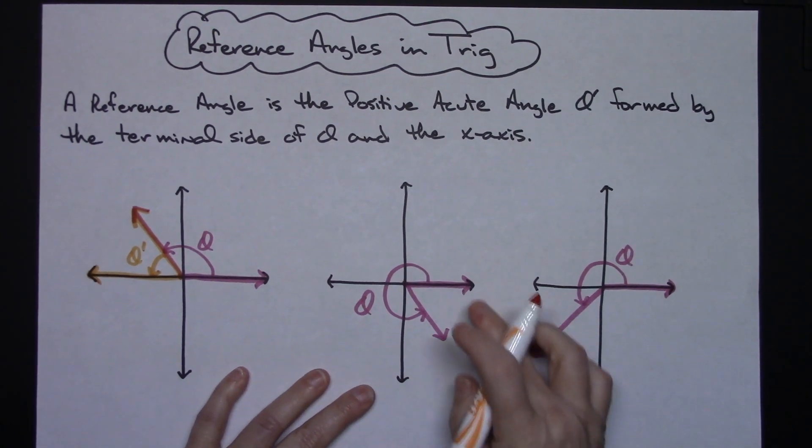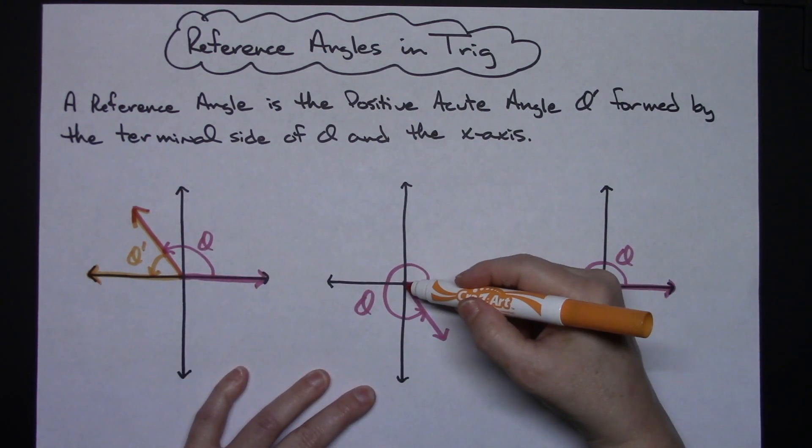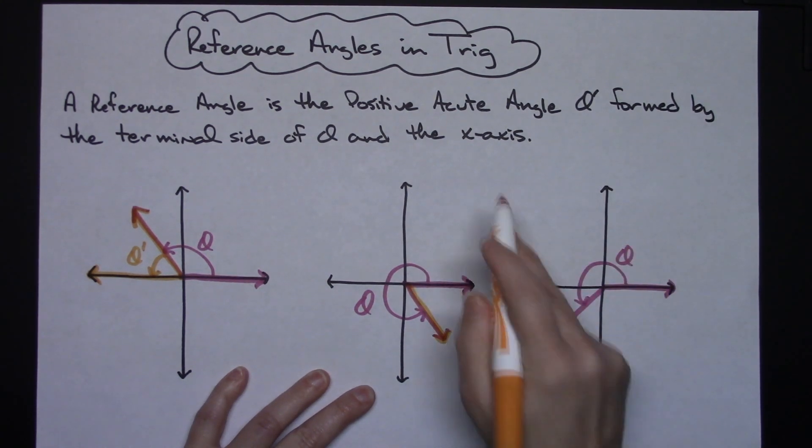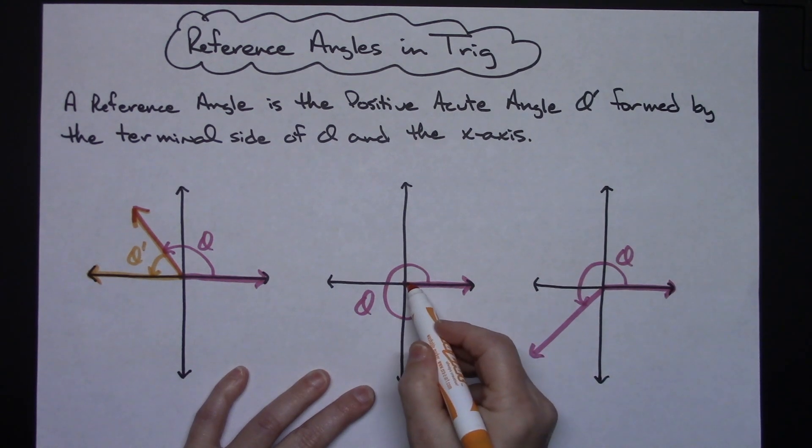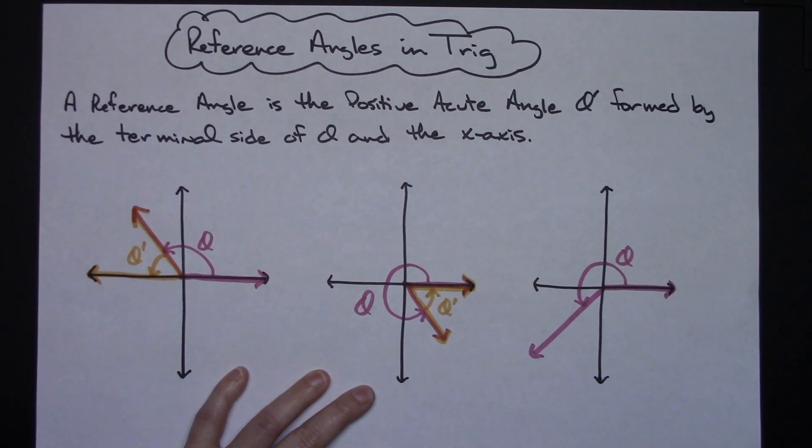In the middle example if I had an angle theta that ended in the fourth quadrant, looking at the terminal side of theta, well here's the terminal side of theta and in between then the x-axis. So here's the x-axis. Right in here I do have an acute angle, it is positive, so that is where my reference angle lies.